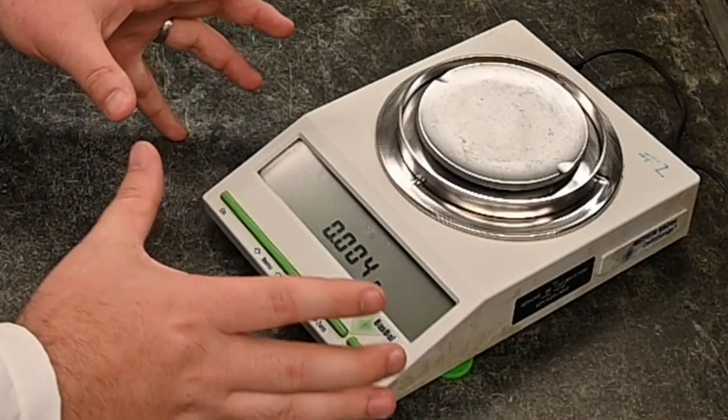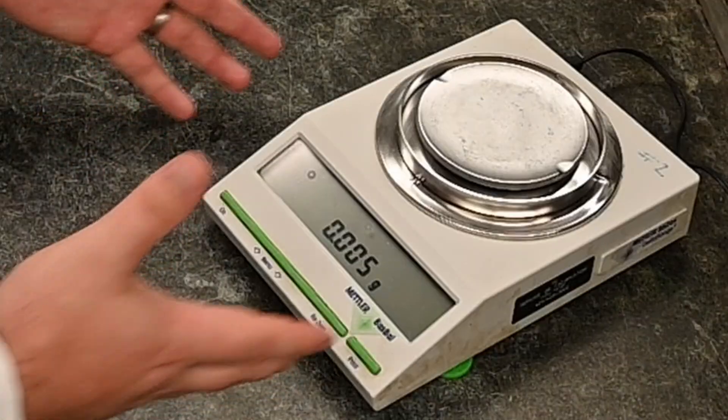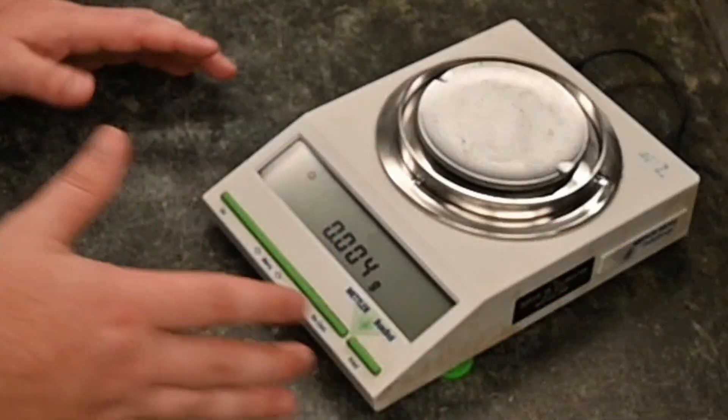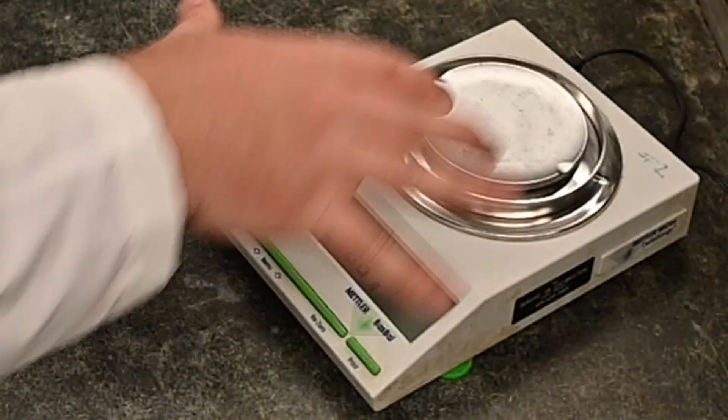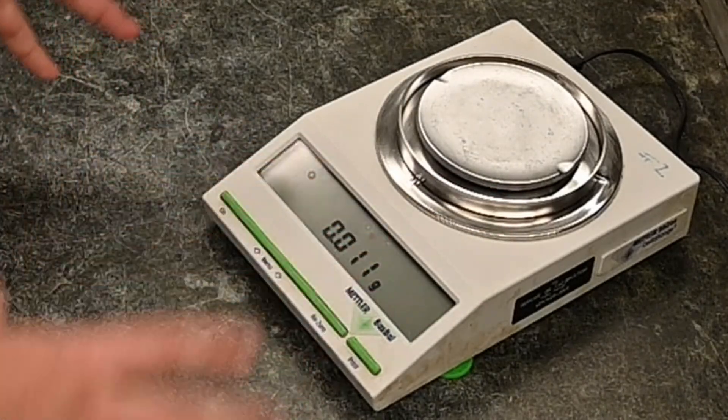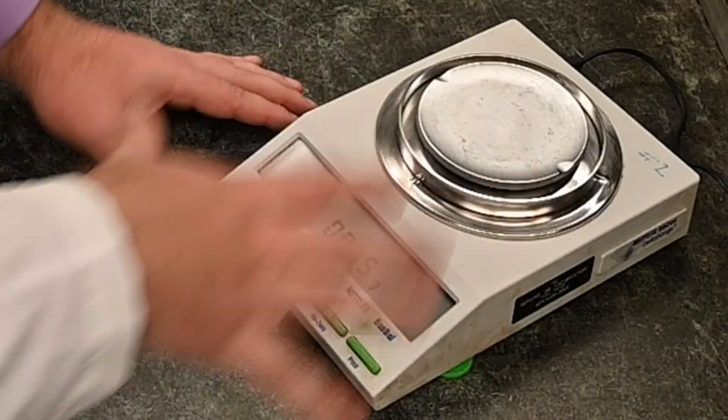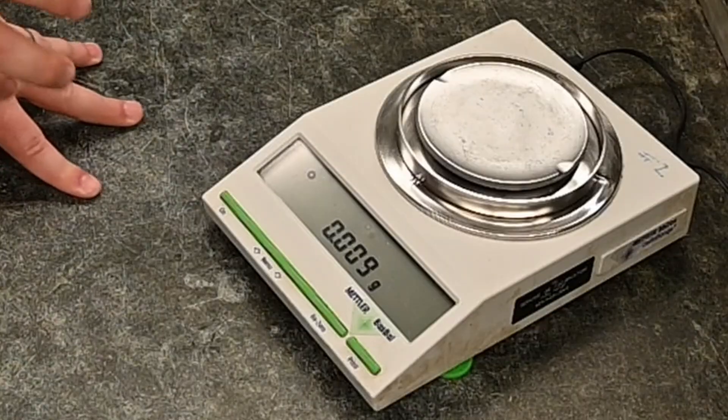One thing you have to worry about with these fancier electric balance scales is that they have a level on it. And the reason is they're so sensitive that even being a little bit off level can cause there to be error. So they actually have these little adjustable feet on the side that you can actually go through and get it right. It probably will already be balanced for you.